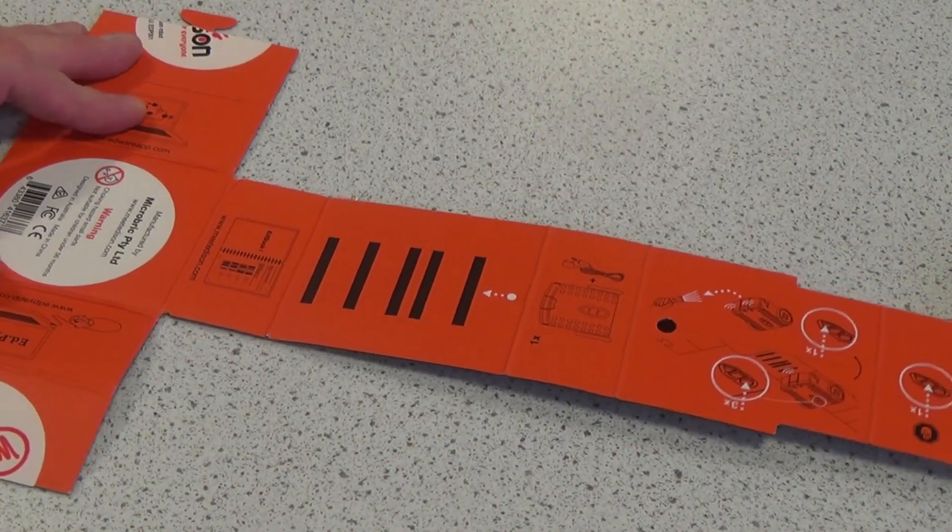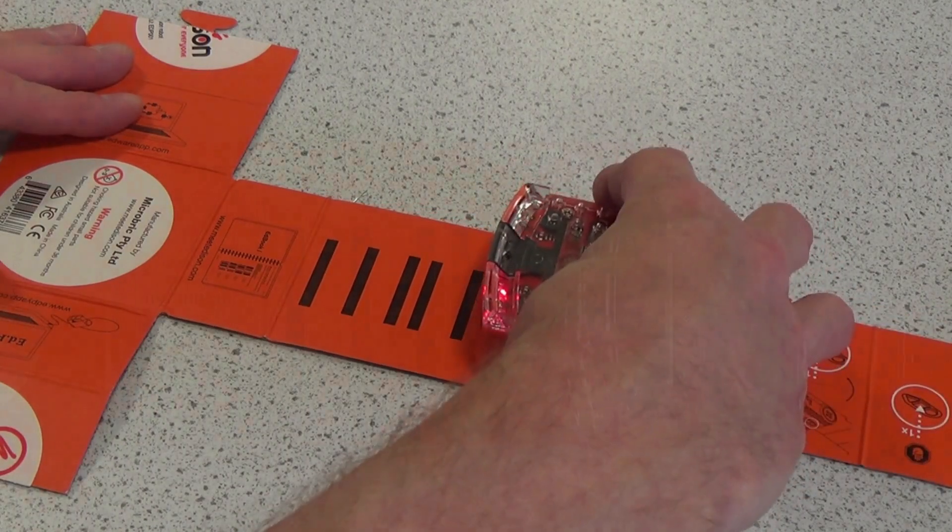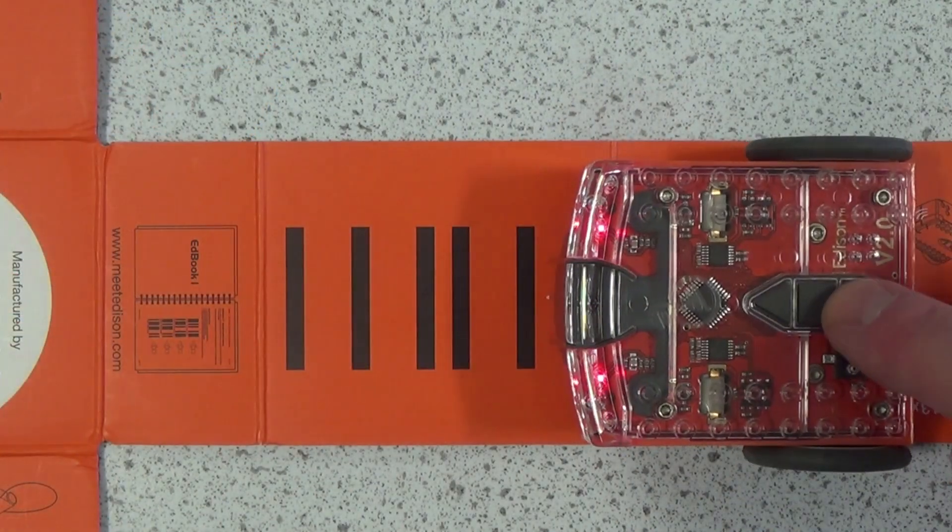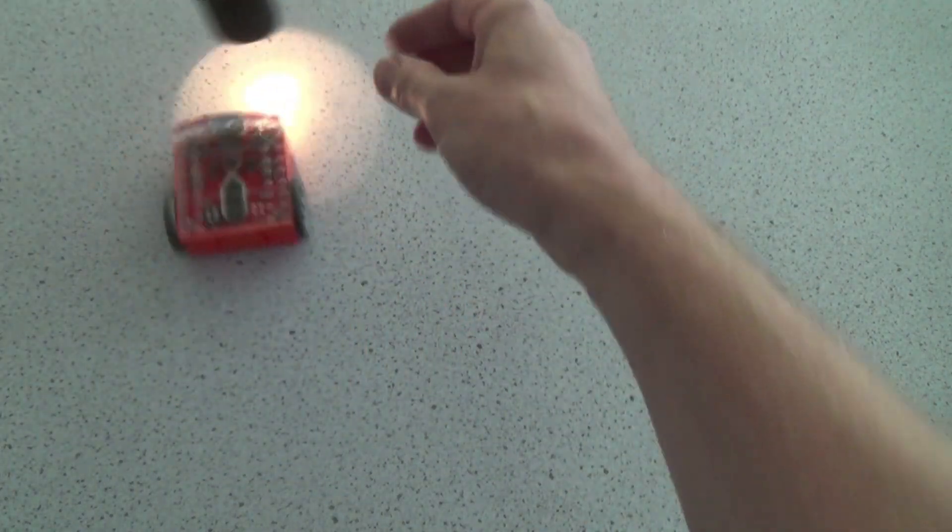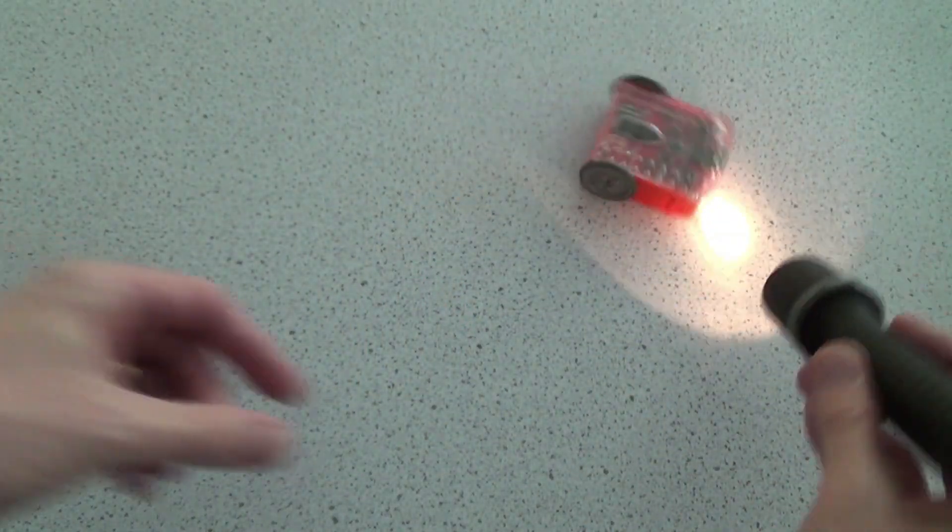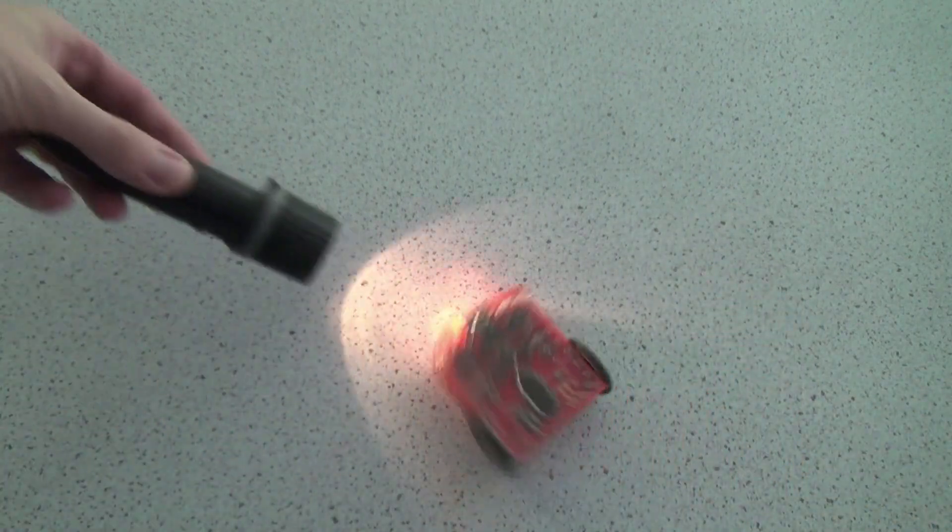Once we install the batteries, we can access one of the preset programs by having Edison read the barcode in the box. Now, when we press the triangular button to run the program, Edison can follow the light it detects from the torch.